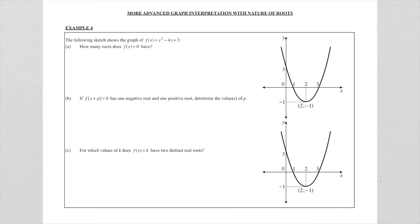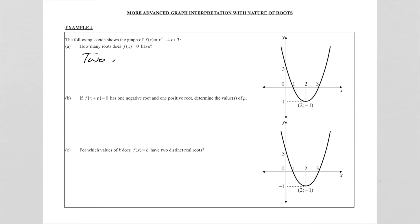The first question is: how many roots does f(x) = 0 have? From the previous lesson, f(x) = 0 refers to the roots of a function or the x-intercepts. So when they ask how many roots, they want to know how many x-intercepts. As you can see from the drawing, there will be two roots for this problem.